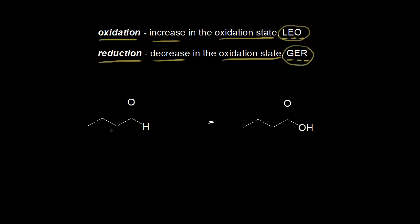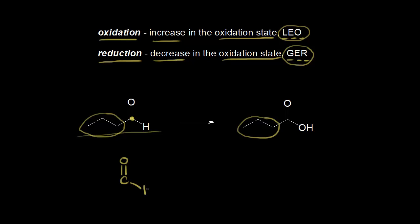Let's look at this starting compound here in this reaction and figure out whether the starting compound has been oxidized, reduced, or neither. If you look at these three carbons on the left and these three carbons on the right, there's no change to those carbons, so there should be no change in the oxidation states of those carbons. But when you look at this carbon right here — the one I just marked in yellow — on the left it's double bonded to an oxygen, and on the right it's bonded to a hydrogen and on the left it's bonded to a carbon.